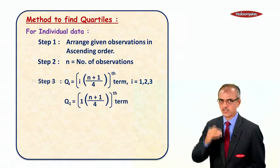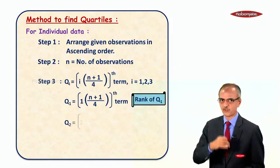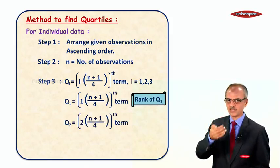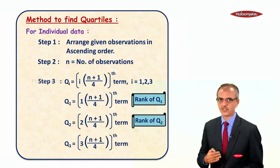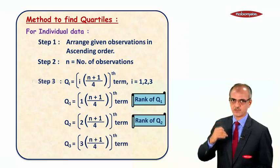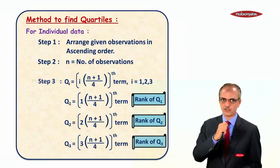So Q1, where i is replaced by 1, that is the rank of Q1. Q2, where i is replaced by 2, that is called the rank of Q2. And Q3 where i is replaced by 3, that is called the rank of Q3.